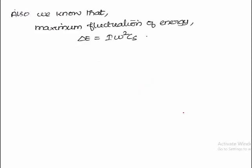Also we know that maximum fluctuation of energy ΔE equals I ω² Cs, where I is mass moment of inertia, ω is mean angular velocity, and Cs is coefficient of fluctuation of speed. The formula for I is mk², and mean angular velocity is 2πn/60, where n is the engine speed.